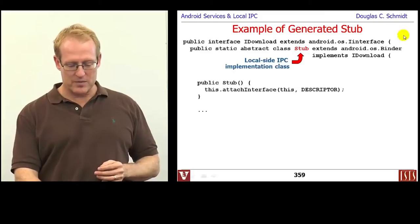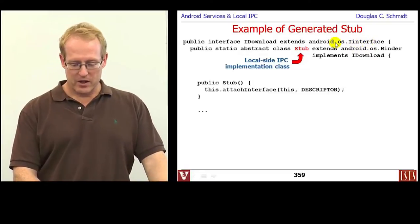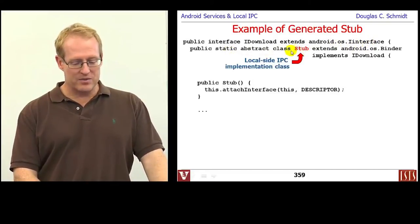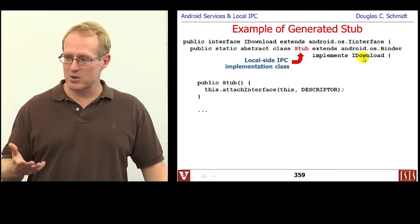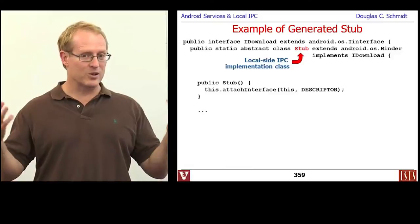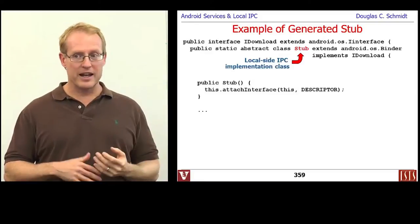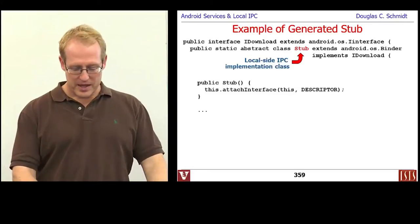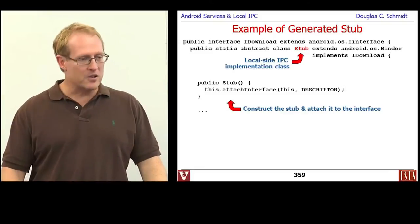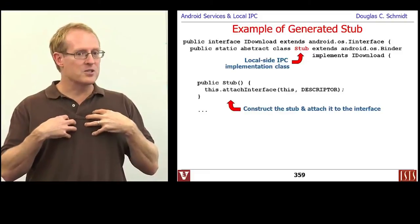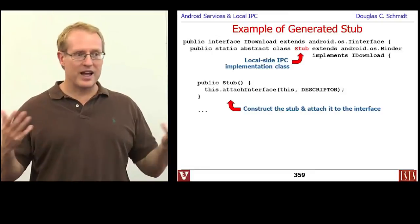You'll see that there's an interface generated that extends the IInterface class. Then there's a static abstract class called a stub — it extends Binder and also implements your interface. In our case, that was the IDownload interface with the downloadImage method. So Stub inherits from Binder and implements the download interface. This is the thing that's going to be on the implementation side. The stub constructor goes ahead and registers an instance of this object with the underlying binder framework, so the framework knows it's got an object that needs to be dispatched, using something called attachInterface.